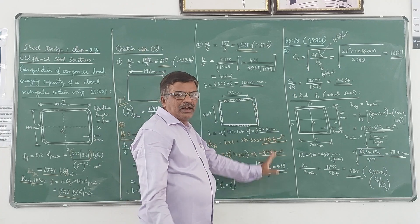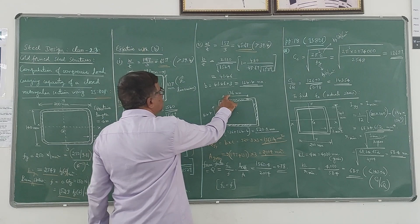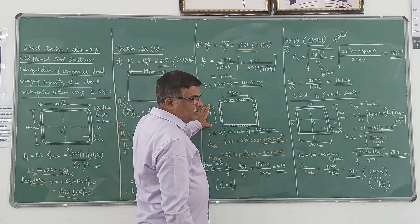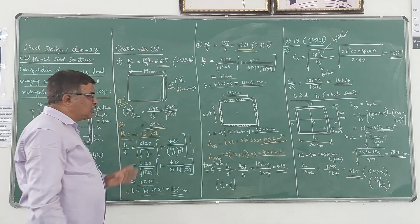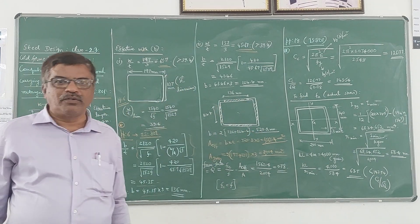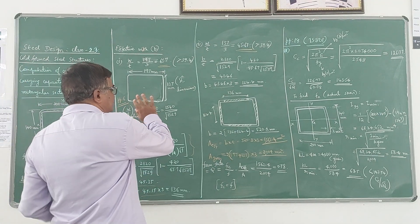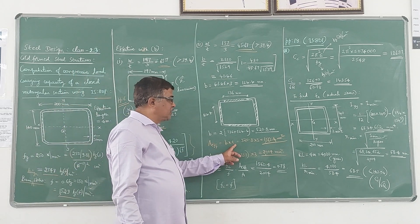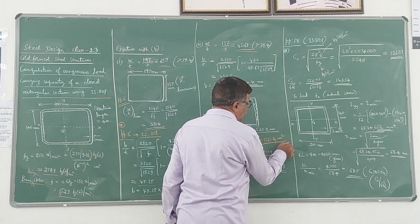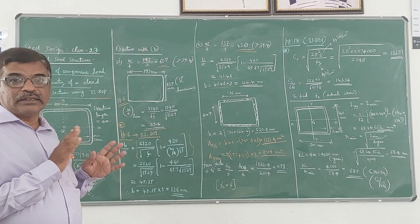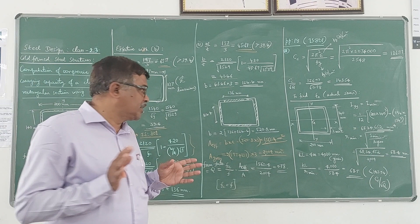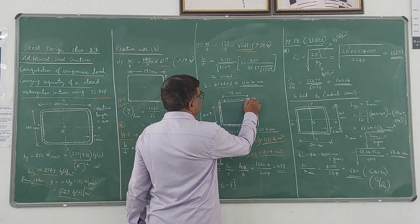We can represent the effective widths in a diagram. Along the X direction there are two widths of 136mm each (symmetric). Along the Y direction there are two widths of 124.4mm each. The total effective width B equals 2 × (136 + 124.4) = 520.8mm. This is the total effective width for the entire section. Multiplying by the thickness of 3mm gives the effective area as 1562.4 mm². Some portions of the section become ineffective under compression.